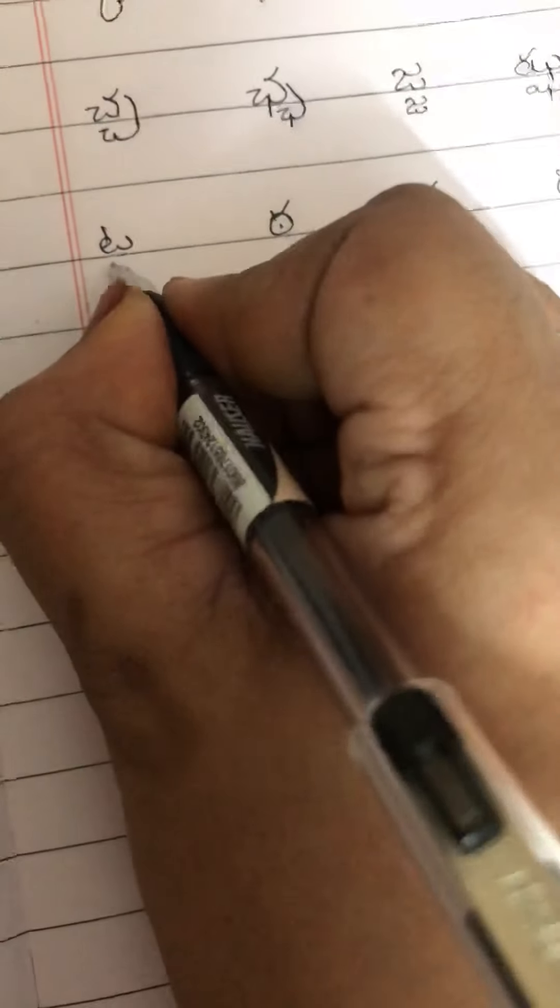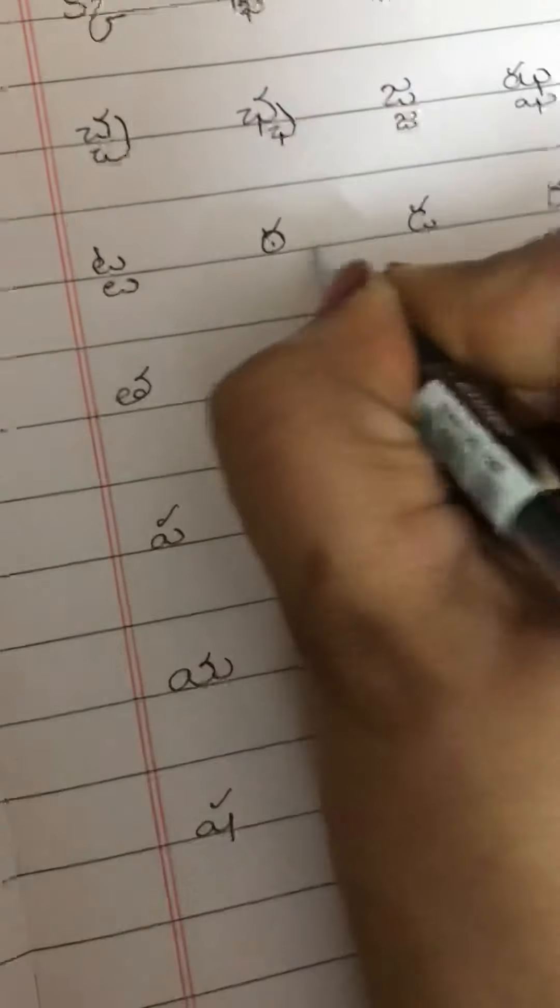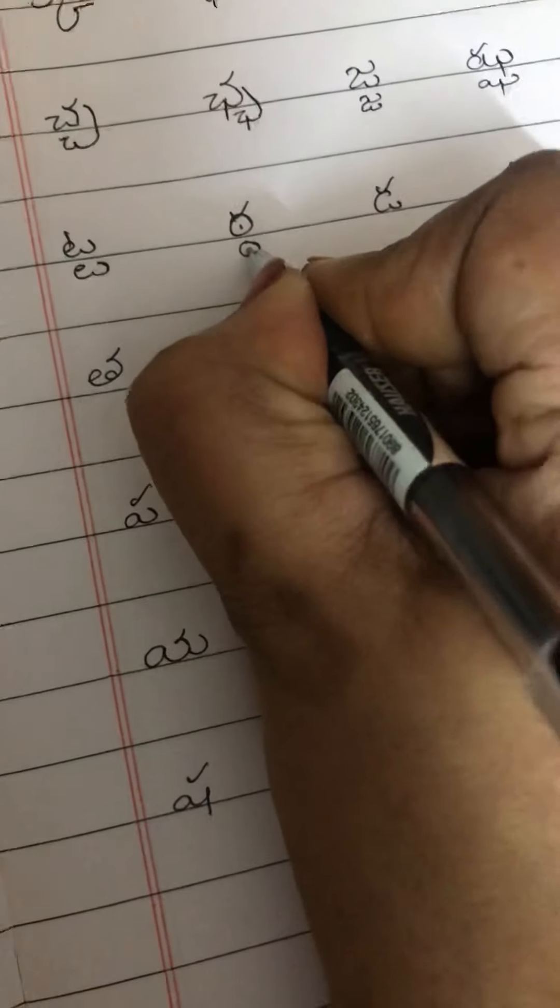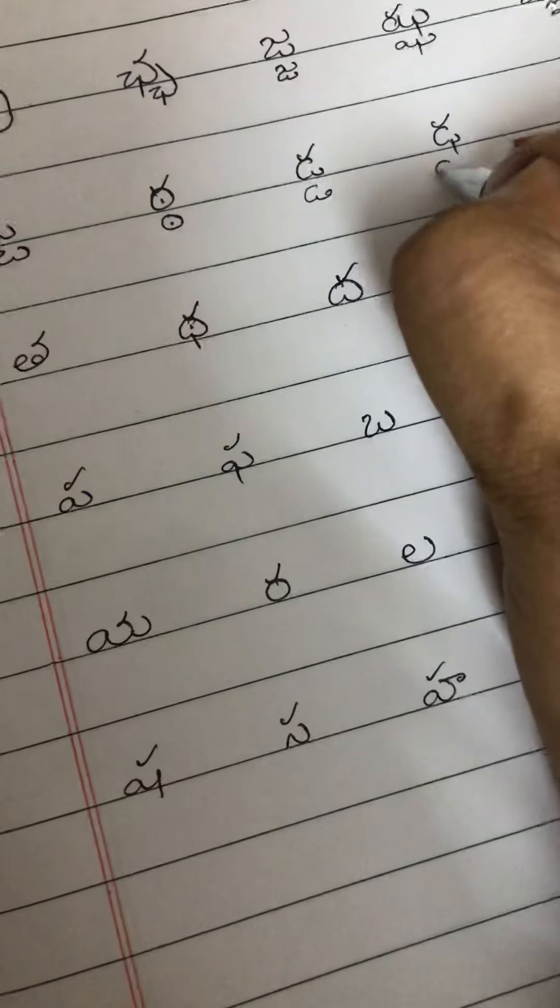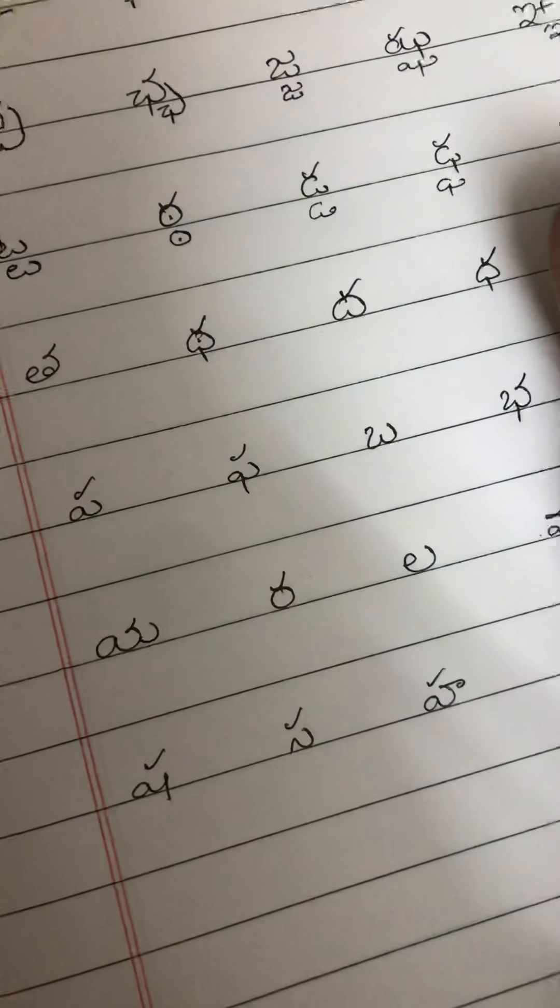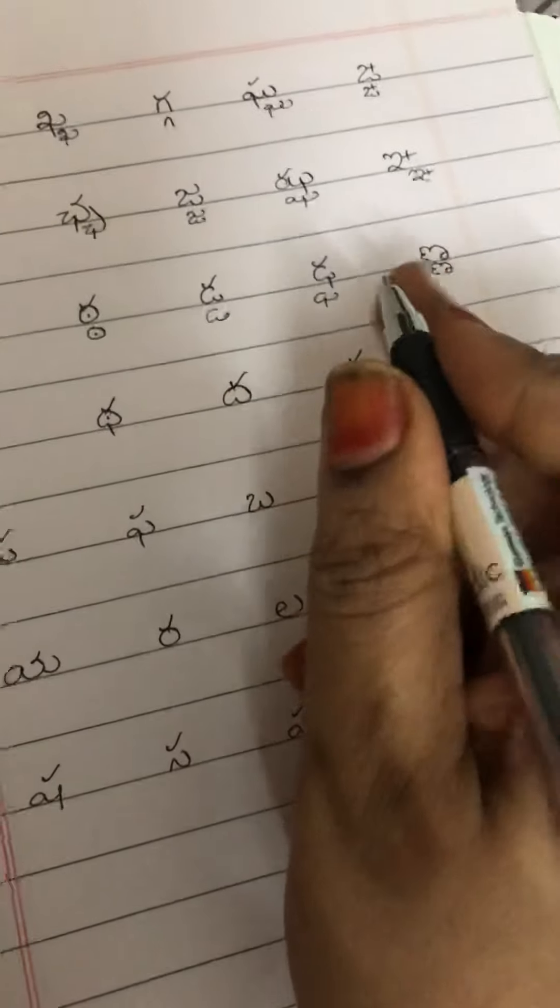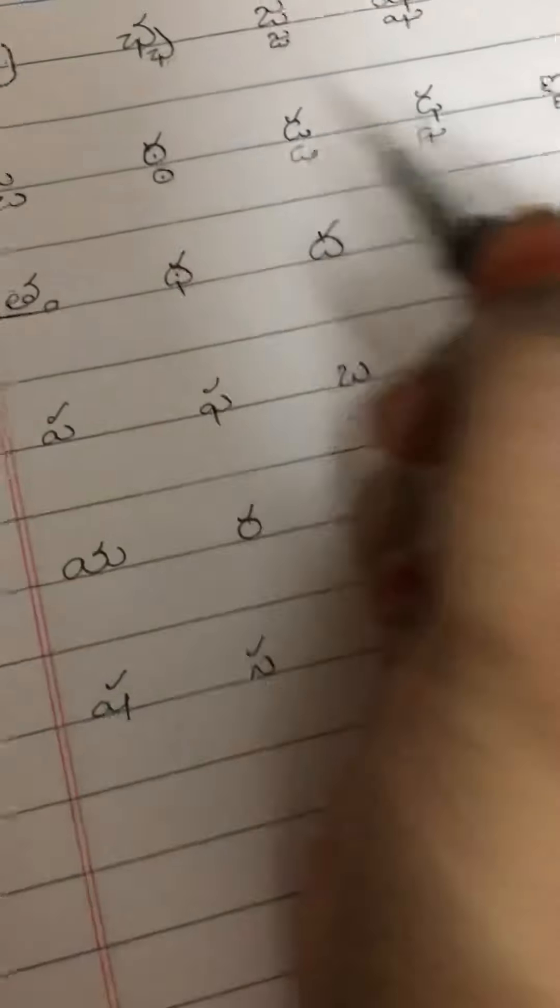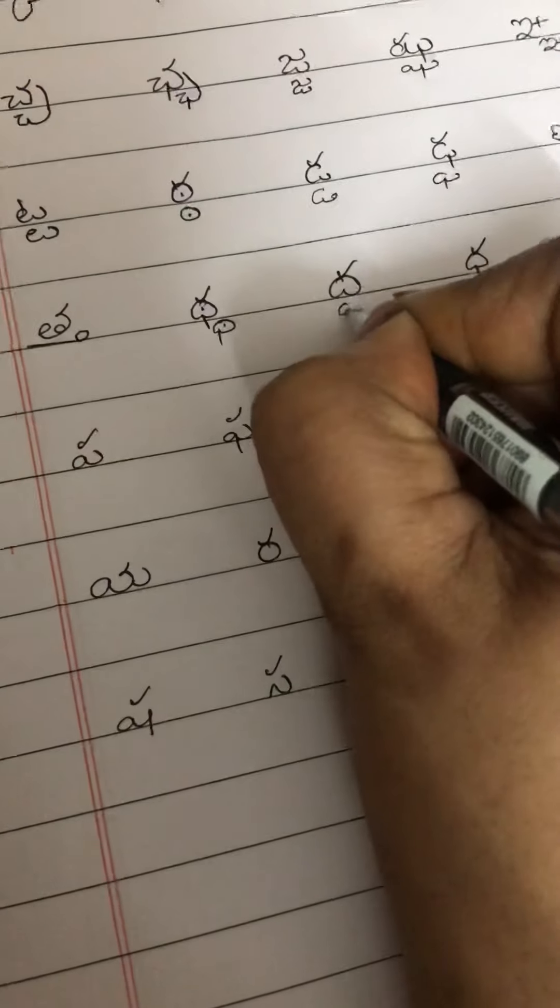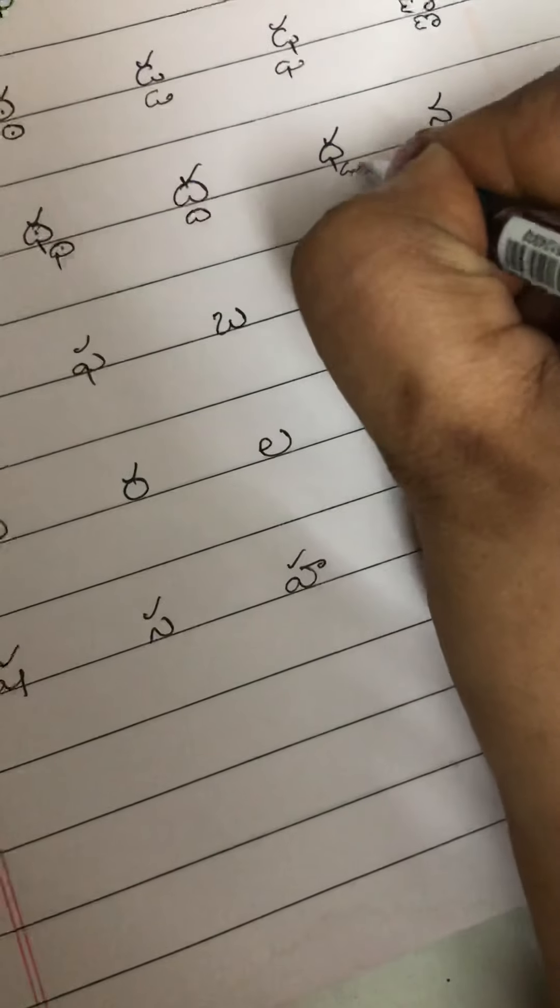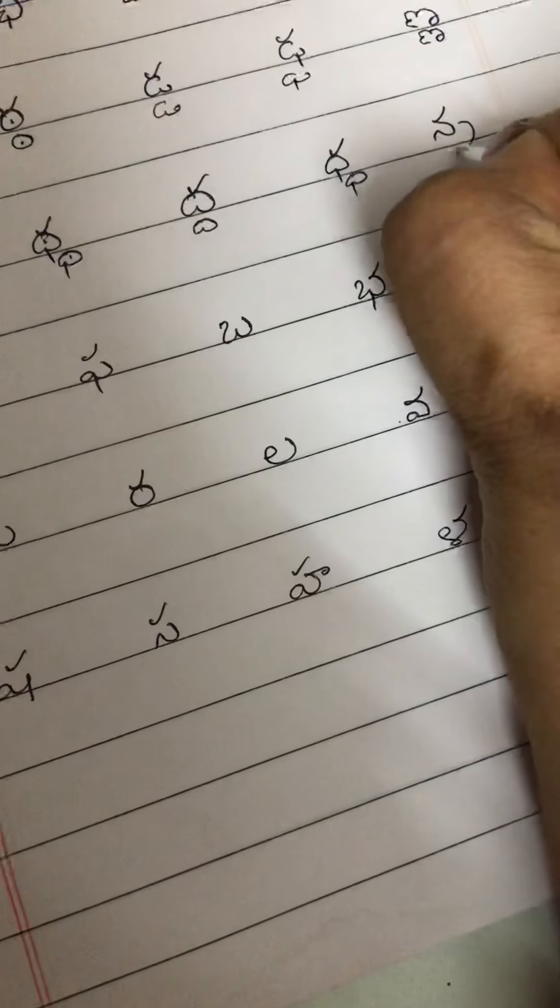Now, ta ki taavattu like this. Ta like this. Da also is like this. And da. Same. E line, all the letters are below the actual letter. Okay. Taavattu will be written like this under the line. Tha, da, da and na.